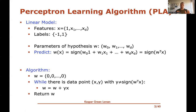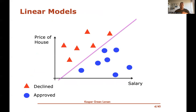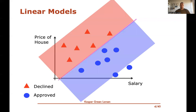When everything is classified perfectly, we return w. We also saw a version for when data cannot be separated by a line. Linear models were motivated by the mortgage example: historic data on house price and salary, and whether the application was approved or declined. It makes sense there might be a linear relationship between salary and house price, so using a line to decide makes sense.